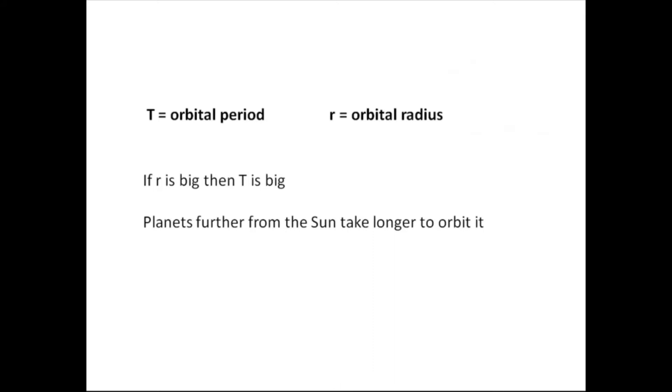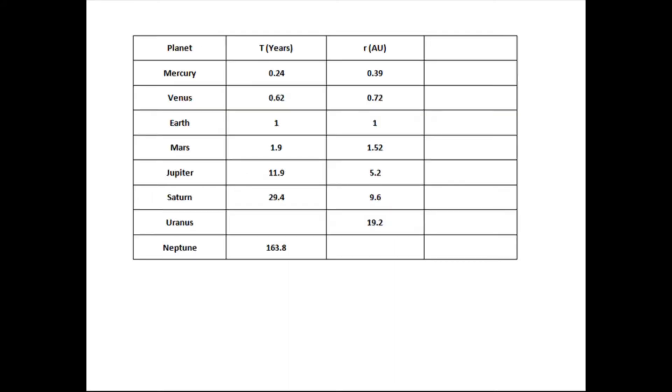Now, if we say that the orbital period is t, the time it takes to go around is t. If we say that the orbital radius is r, the distance from the sun is r. Then if r is big, then t is big. Planets further from the sun take longer to orbit it. Looking at this table, I've got Mercury to Neptune. I've got their orbital period in years. And I've got their orbital radius in astronomical units. So obviously for Earth, it's 1 and 1.